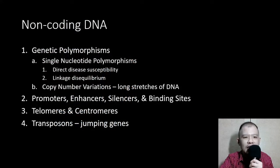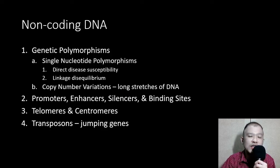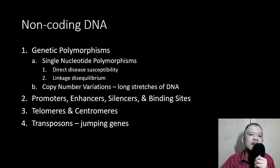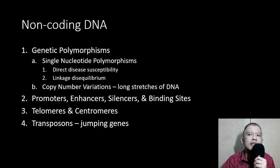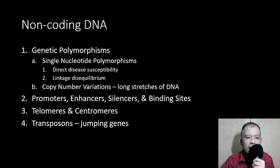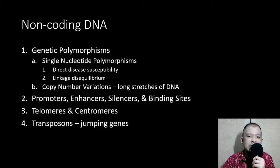Let's go to non-coding DNA. We'll be talking about genetic polymorphisms — these are variations in the DNA in the form of a variation in a single nucleotide, what we call SNPs. SNPs can directly cause a disease, or they can be a neutral variant, meaning they don't cause a disease by themselves, but they can cause disease if paired or in close proximity with another variant that is causing disease.